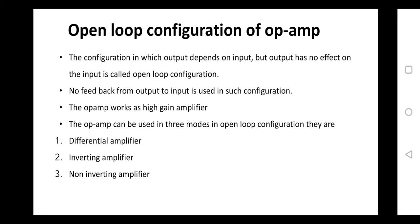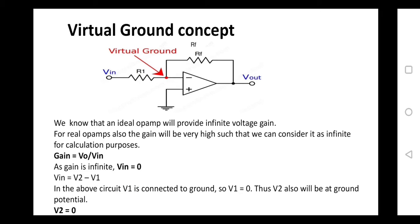In open loop configuration, the output depends only on the input because there is no feedback path from output to input, and the op-amp operates as a high gain amplifier. We can use the op-amp in three different configurations: differential mode, open loop configuration, and inverting and non-inverting configurations.